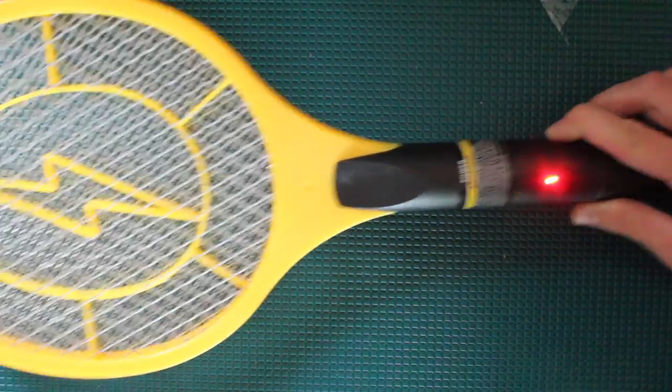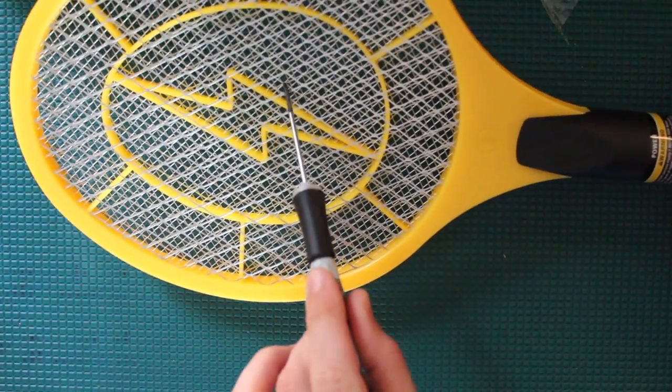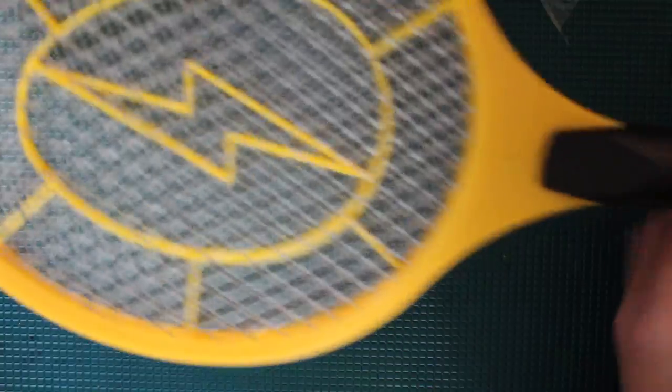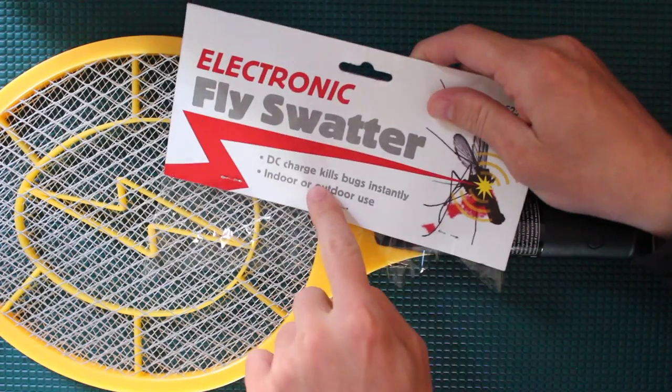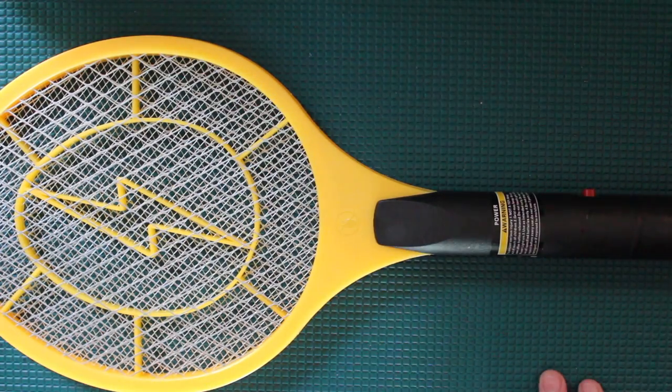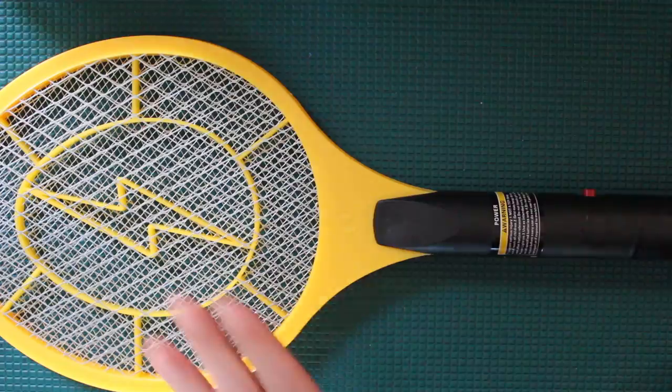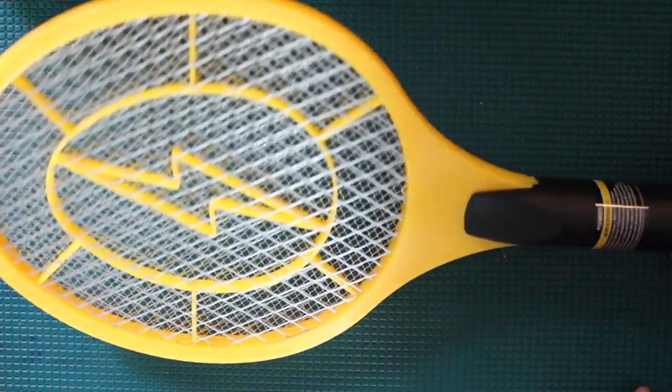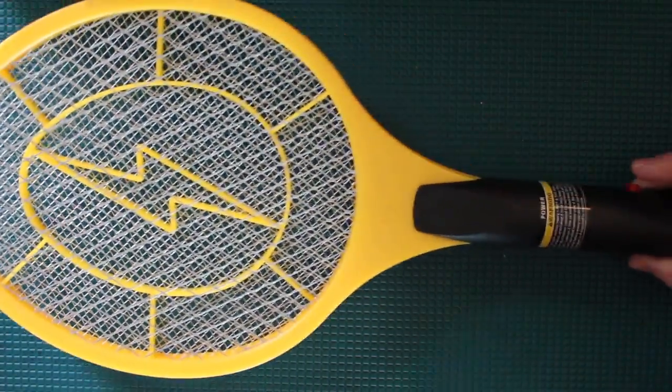You press and hold the button there, and then when the fly gets in between there it is instantly killed with the DC charge. So anyway, I thought it'd be a cool video to take this apart and see exactly how they are generating that high voltage to kill bugs. Let's take a closer look.